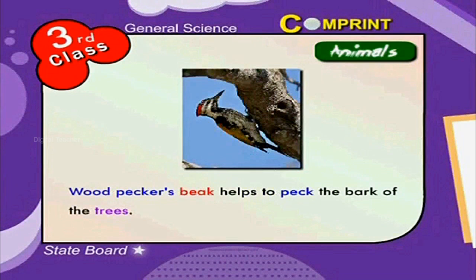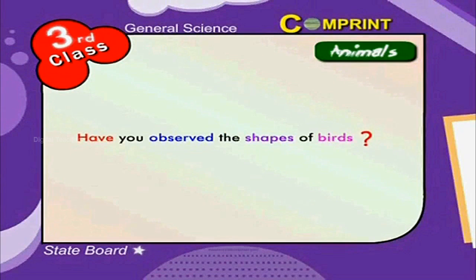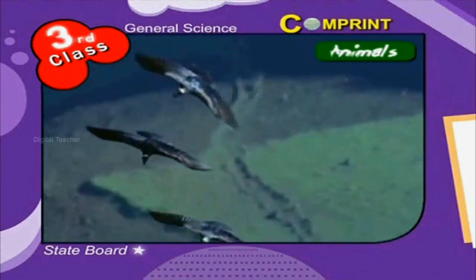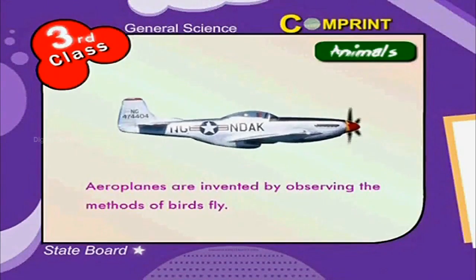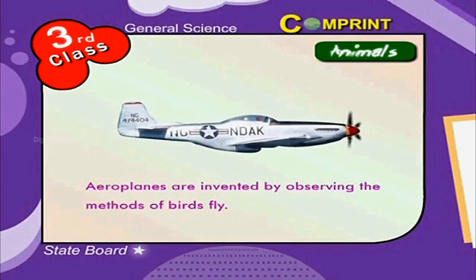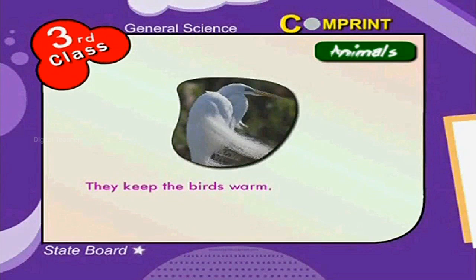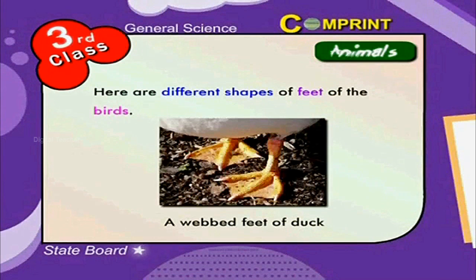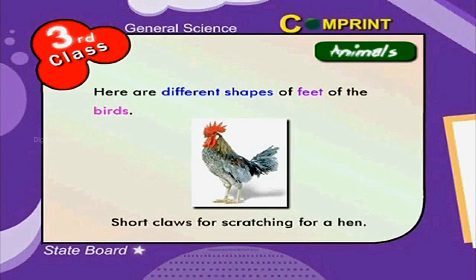The woodpecker's beak helps it to peck the bark of trees so that it can catch the insects inside. Have you observed the shapes of birds? Birds have broad, streamlined bodies. Their bones are hollow and filled with air, so their light weight helps them to fly. Aeroplanes were invented by observing the methods of birds flying. Feathers also help birds in flying and keep them warm. Birds have different shapes of feet: a webbed foot for the duck, strong claws for the eagle, short claws for scratching for a hen, and hooked nails to clutch branches for a parrot.